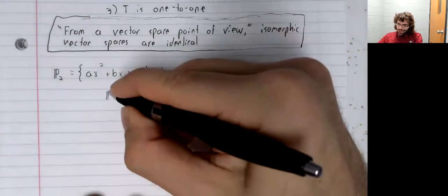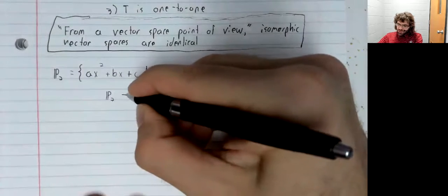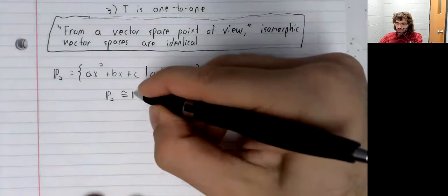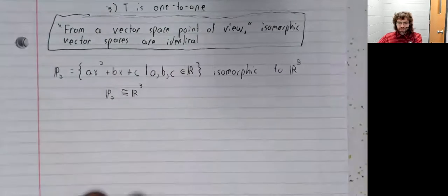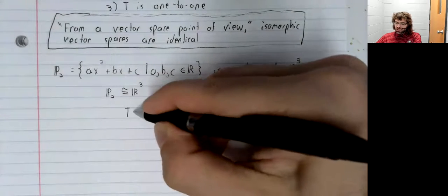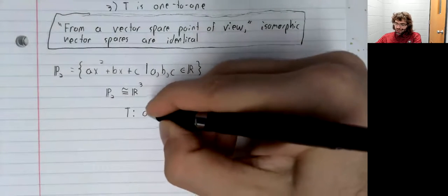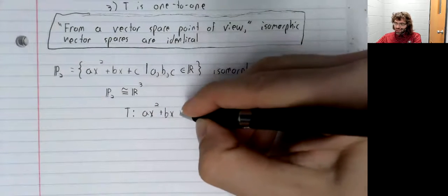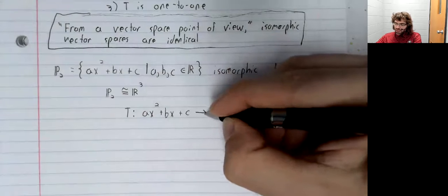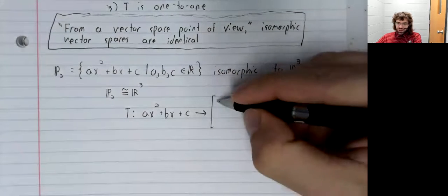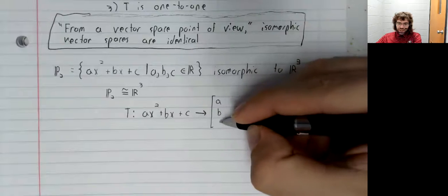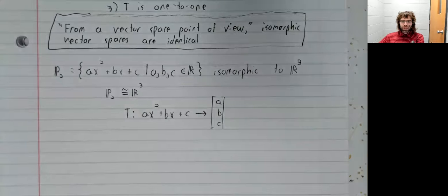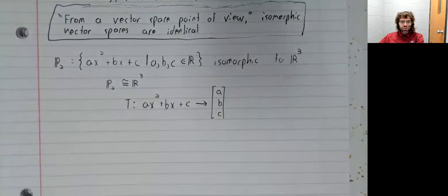In particular, the transformation that takes ax² + bx + c and maps it to the vector [a, b, c] is an isomorphism. We'll prove this a little later.